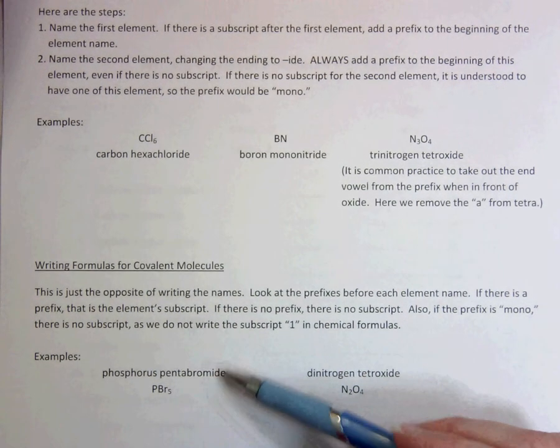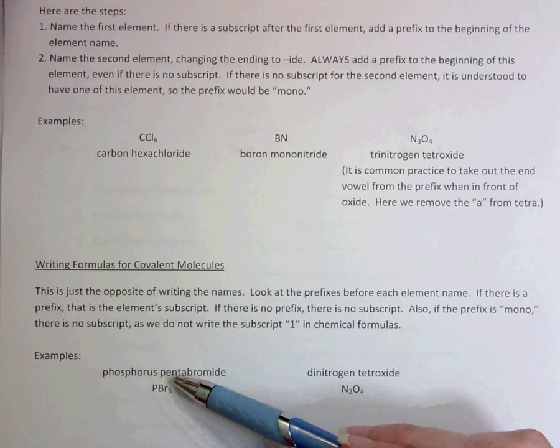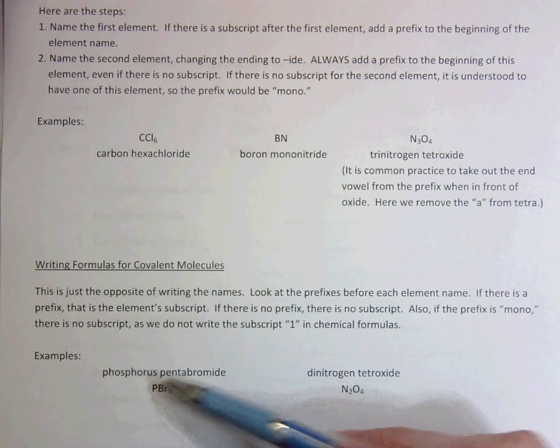So I put bromide, which would be bromine, because the ending, remember, we changed to "-ide." So it was bromine, and there's five of them. So I put Br for bromine, and five.